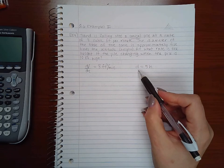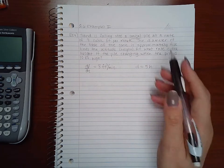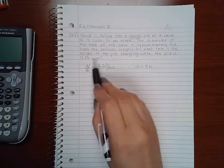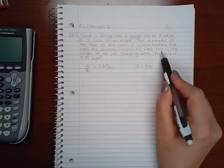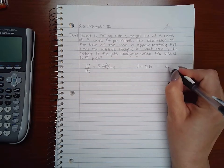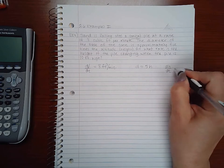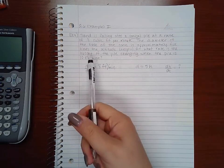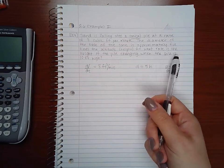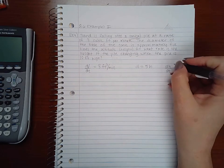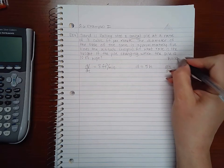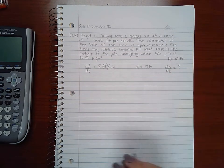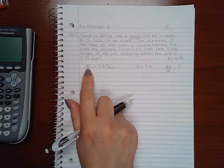It says at what rate is the height? Rate of the height means dh/dt, so that's what I'm trying to figure out when the pile is 10 feet high. So when we have h equal to 10 feet.